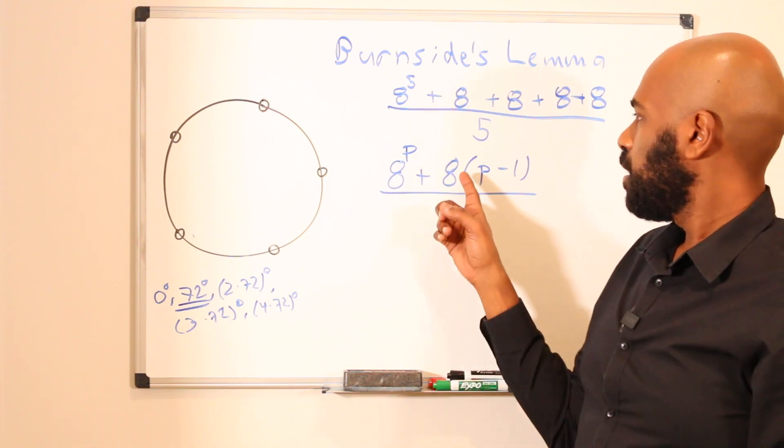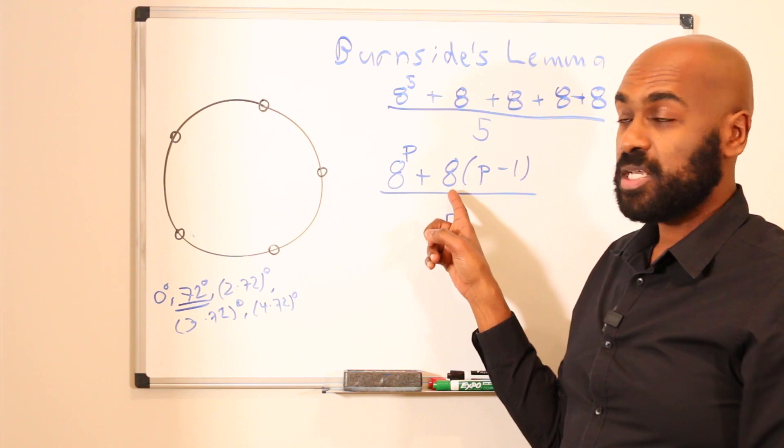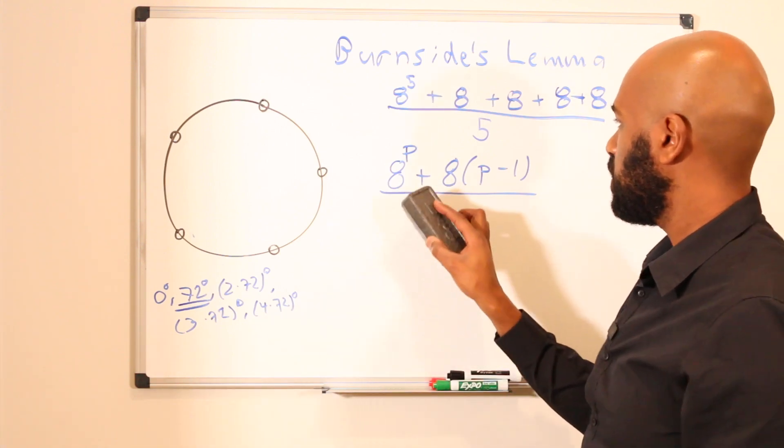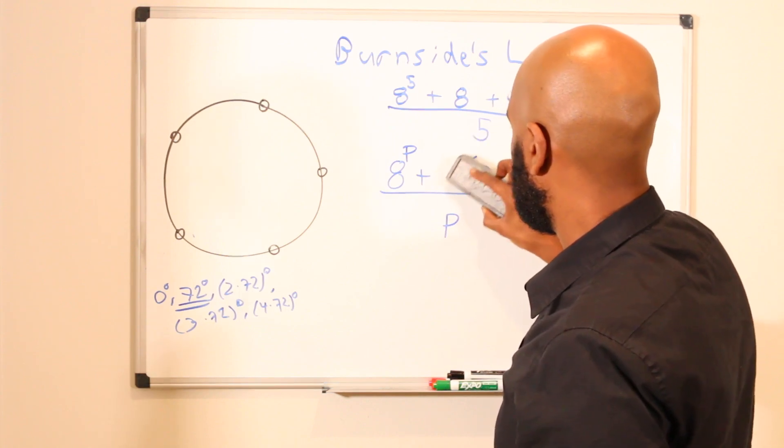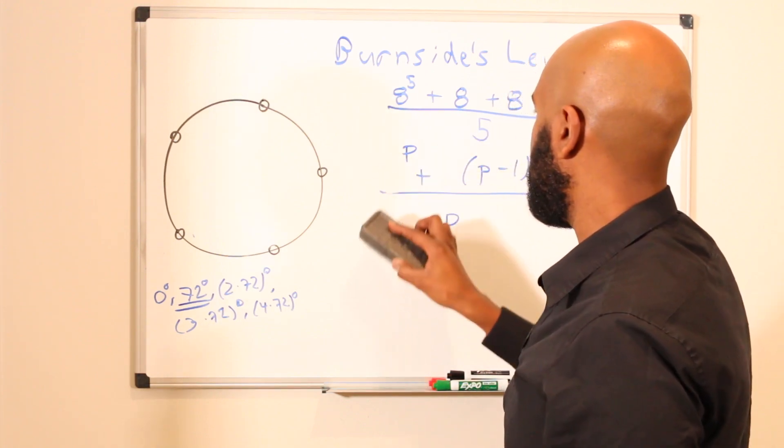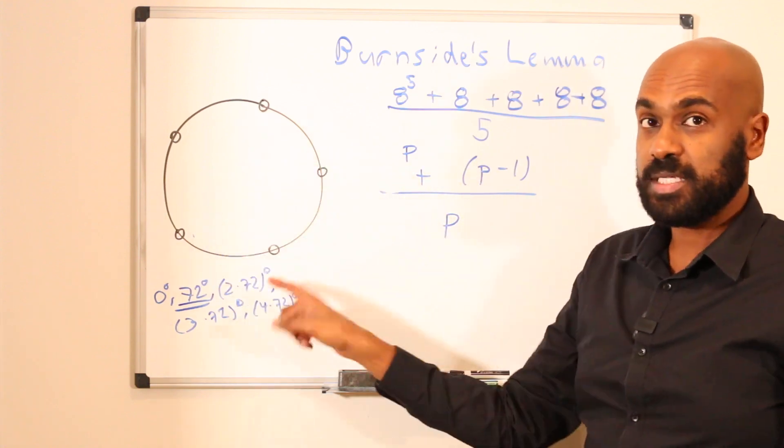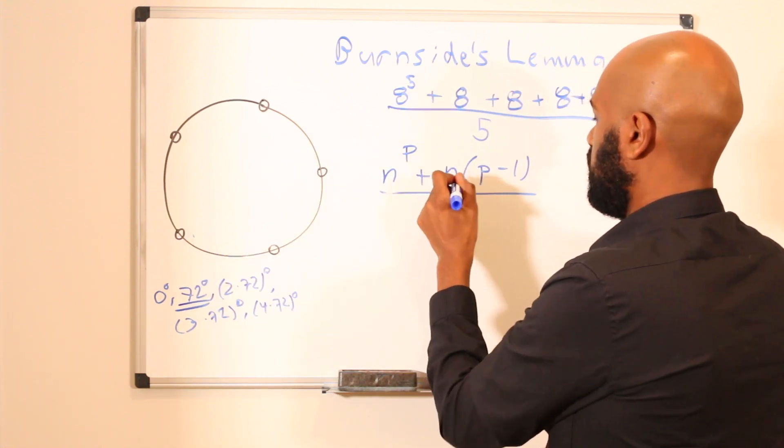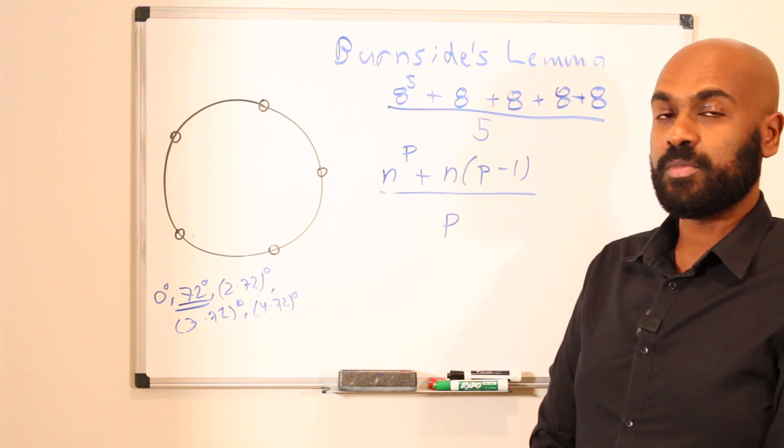Similarly, we used 8 colors in our painting, we could have used a general number of colors like n to generalize this result even more to say that if we had p beads in a necklace and n colors to choose from, we'd have this formula for the total number of colorings.